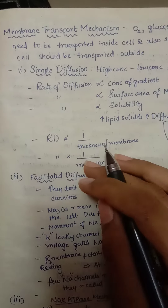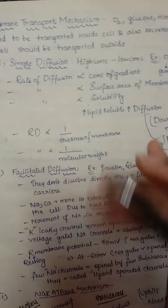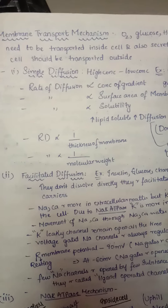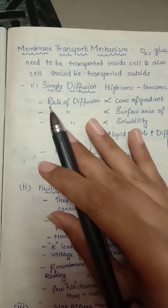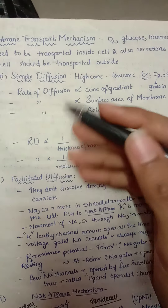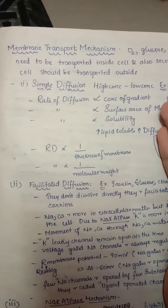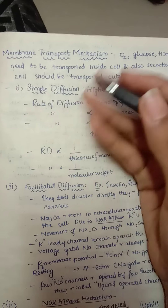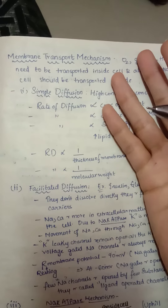Let us start our membrane transport system. Substances like oxygen, glucose, hormones, etc. mainly need to be transported inside the cell, and the secretions of the cell should be transported outside the cell. So this transport is carried out by different processes.